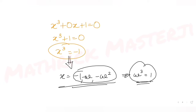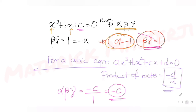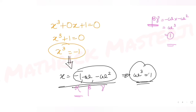So the three roots are minus one, minus omega, and minus omega squared, corresponding to alpha, beta, and gamma respectively. We can verify: beta times gamma equals minus omega times minus omega squared equals omega cubed equals one. This satisfies the given condition that beta times gamma equals one.